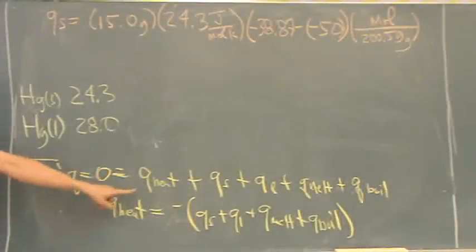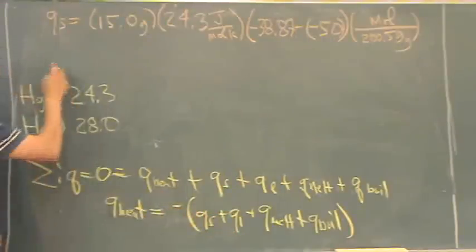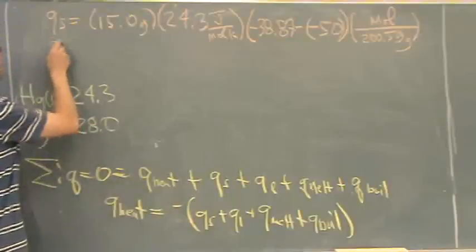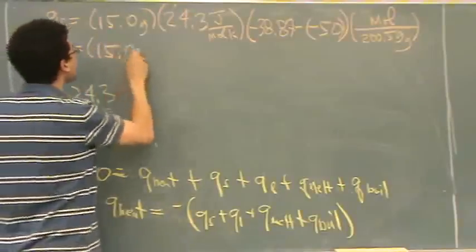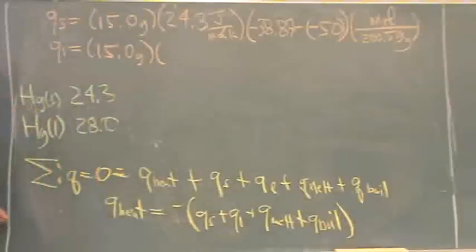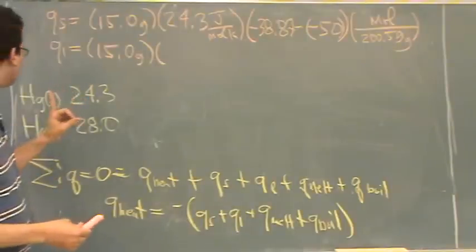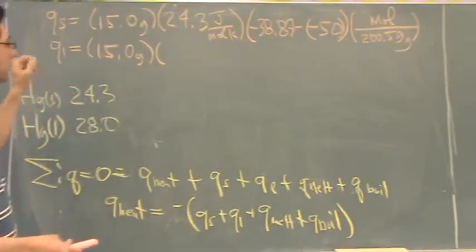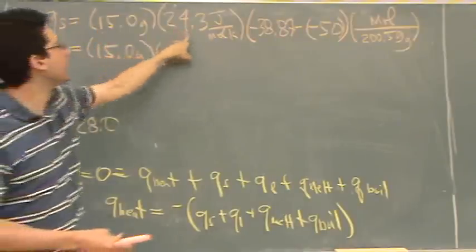That's just the first one. Now the next one, Q for the liquid. Fifteen grams. The only thing that's really, two things will change. One is the specific heat. I have a question. The specific heat is 27.3 joules per mole per kelvin, right?